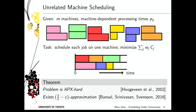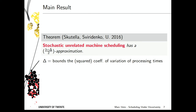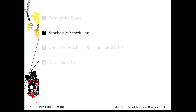This talk is about stochastic scheduling, where the processing times of jobs become random variables. Let me already mention what the result is going to be: for stochastic unrelated machine scheduling, we show you can get a (3 + δ)/2-approximation. That would be a 3/2-approximation if δ weren't there. δ is defined later but should be thought of as a measure of variability — specifically an upper bound on the squared coefficient of variation of the job. The higher the variability, the worse our approximation guarantee.